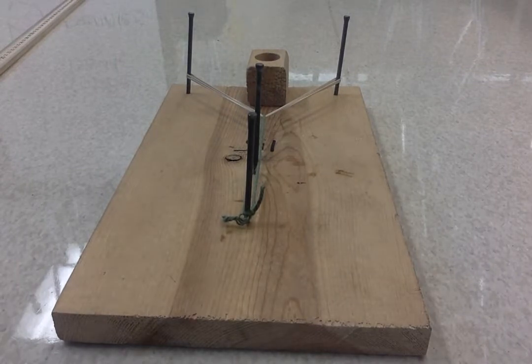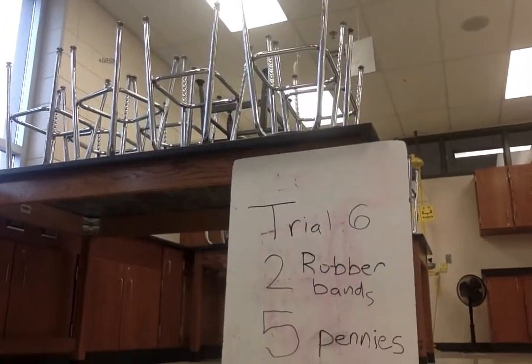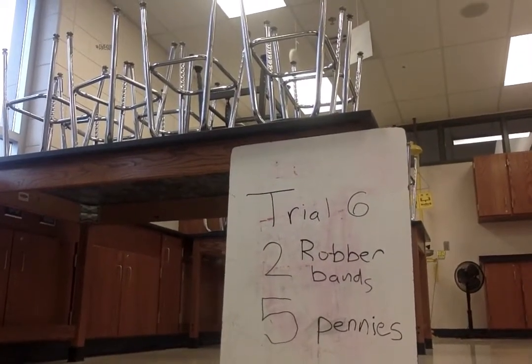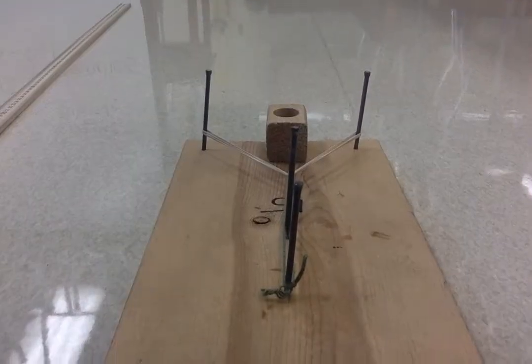You can see I've got the setup here. Oh shoot, I didn't get a picture of the trial though. This is trial six. We've got two rubber bands and five pennies. You can write that down. Here's our setup.